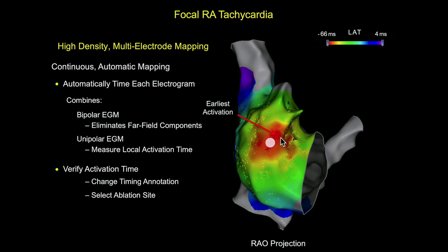So it's important to be able to look at the points in the area where you think the site of earliest activation is, and to use good criteria to actually select the ideal ablation site. After doing that, you have to place the ablation catheter in the chamber and navigate to that region. The best results are obtained when you look at the electrograms on the ablation catheter and actually select the final ablation site based on the electrograms that tell you you're at the site of earliest activation.